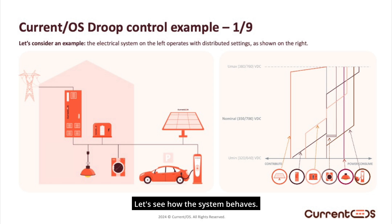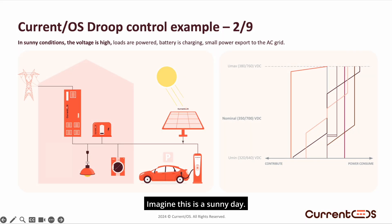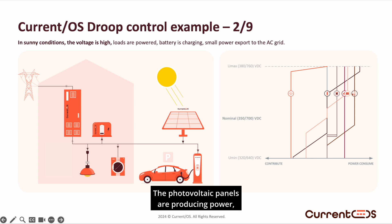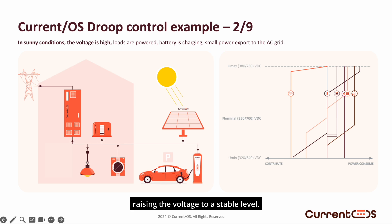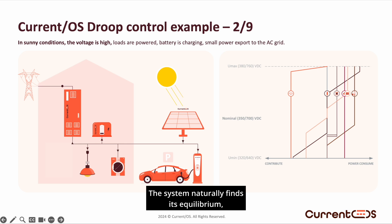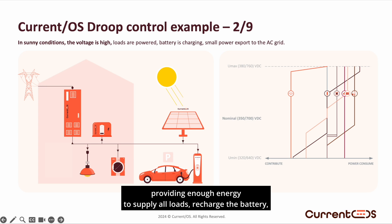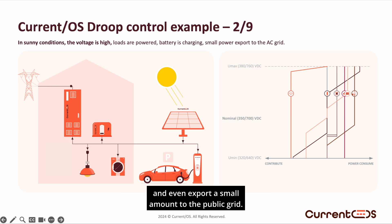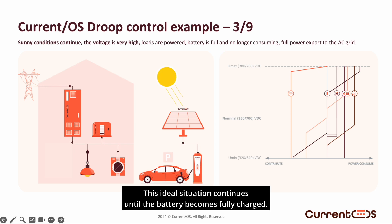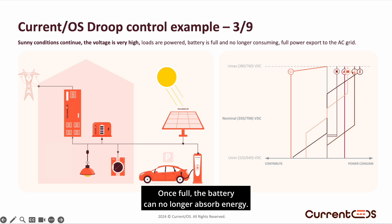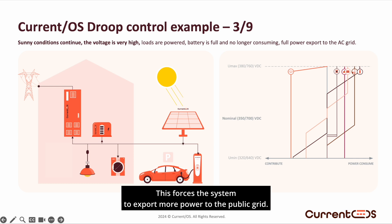Let's see how the system behaves. Imagine a sunny day: the photovoltaic panels are producing power, raising the voltage to a stable level. The system naturally finds its equilibrium, providing enough energy to supply all loads, recharge the battery, and even export a small amount to the public grid. This ideal situation continues until the battery becomes fully charged. Once full, the battery can no longer absorb energy. As a result, the system voltage rises to a higher level, finding a new equilibrium, and the system is forced to export more power to the public grid.